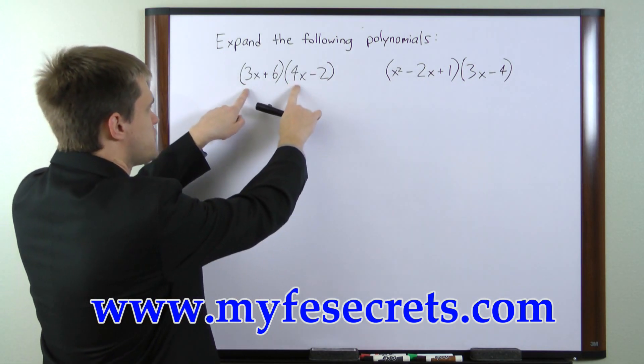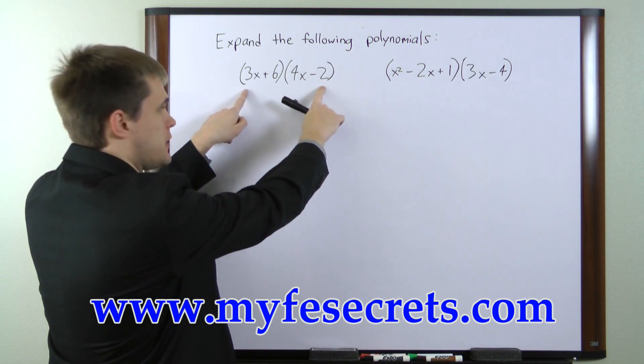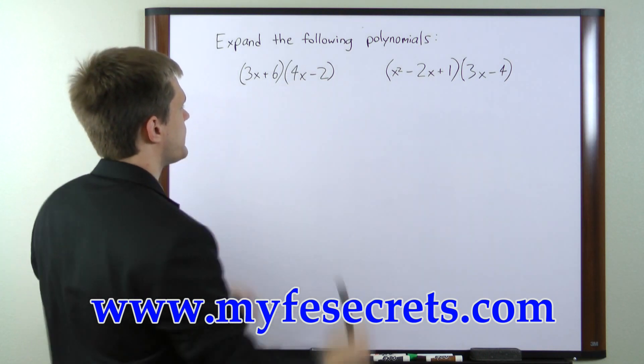So you would multiply the first pair, the outside pair, the inside pair, and then the last pair.